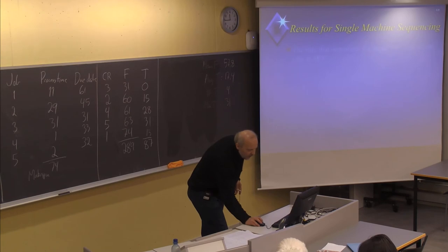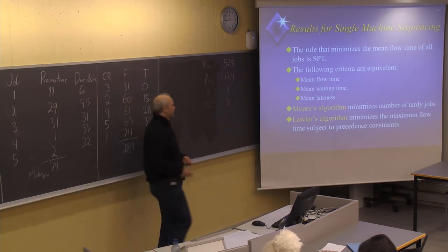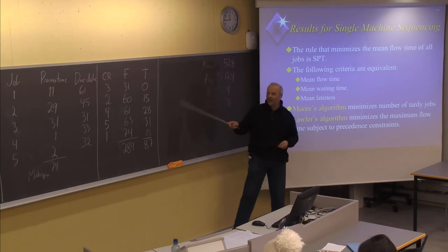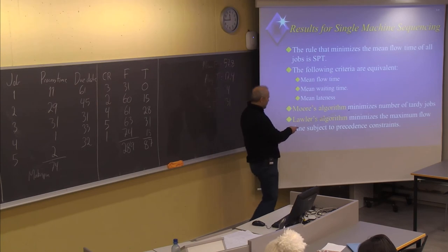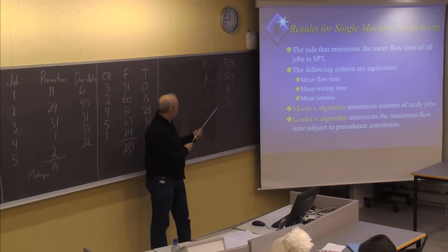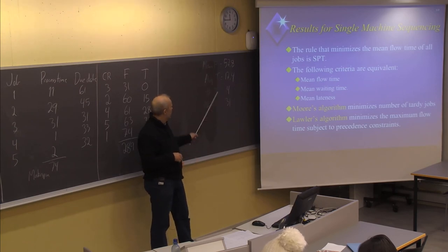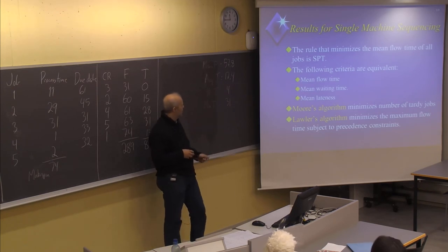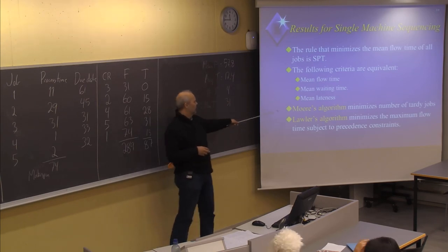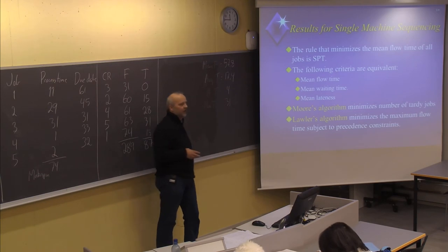Before we finish today, we will also look at Moore's algorithm, which is more of an algorithm where we also choose one job at a time. This algorithm gives the optimal result if the objective is minimizing the number of tardy jobs. It will find a sequence with the least possible number of tardy jobs — there may be different sequences with the same number, but no sequence can give a better result on this particular objective.